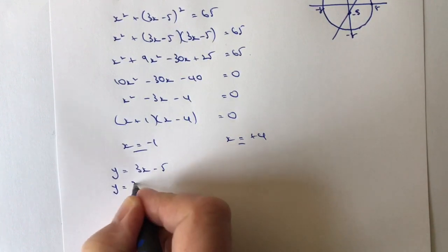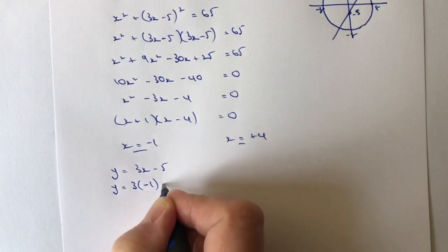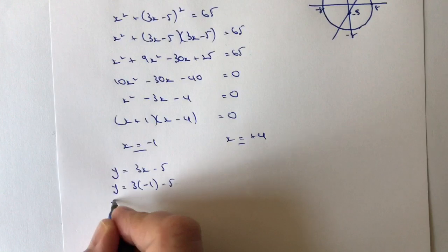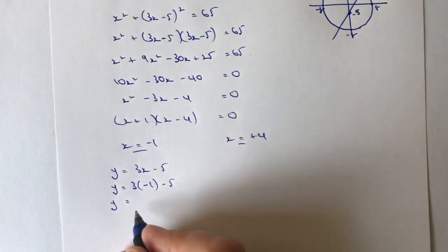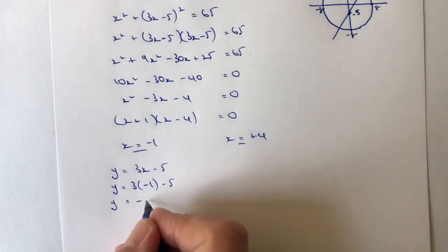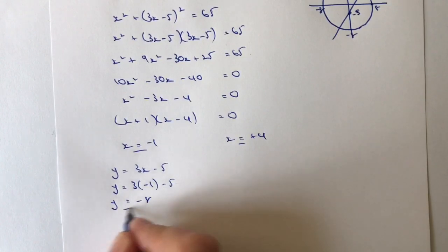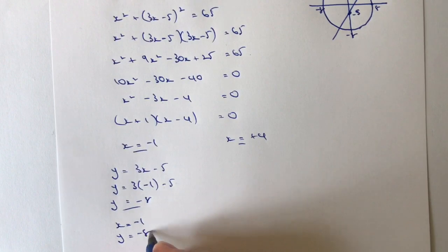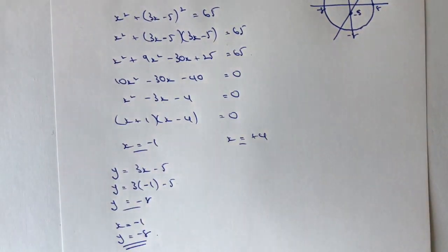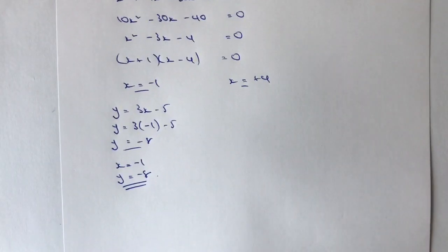So therefore, y equals 3 times minus 1 minus 5, which is going to give us a y value of minus 8. So what we're saying is that when x equals minus 1, y must equal minus 8. And that would be the answer for that part of the equation.